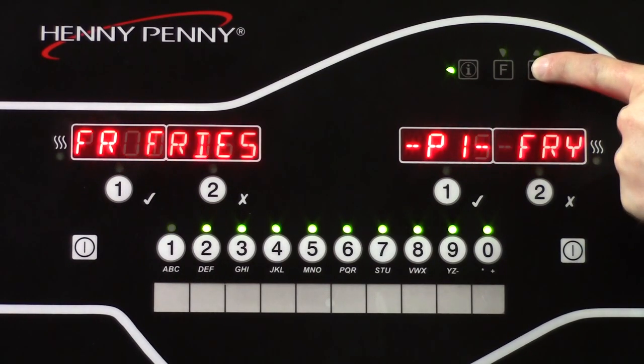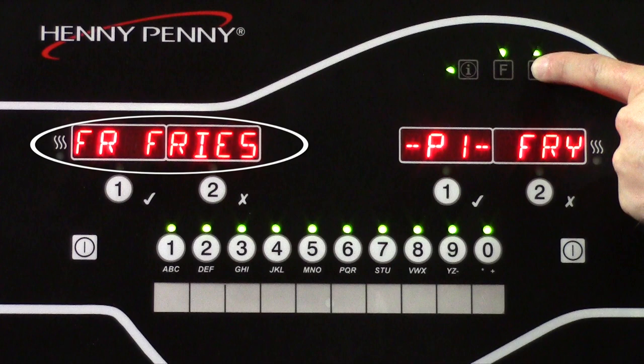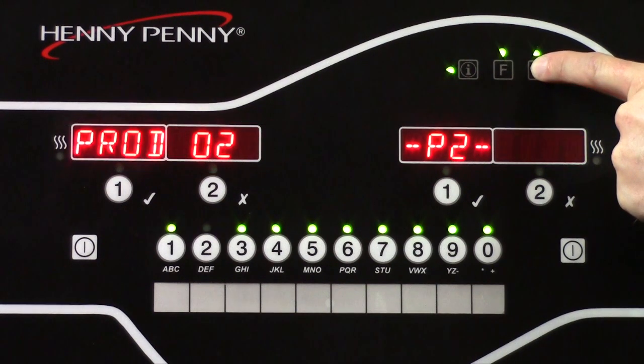The only product on our control that currently has anything programmed to it is product 1. As you can see, it is set to fries. For this example, we are going to program our strips to P2 or PROD02.